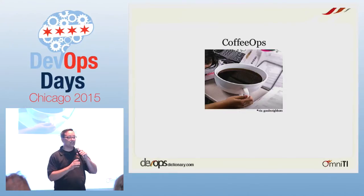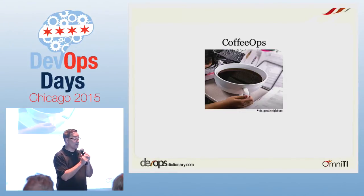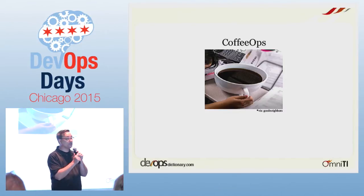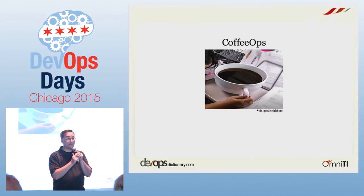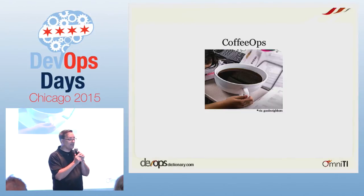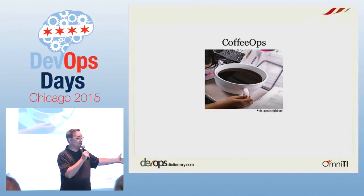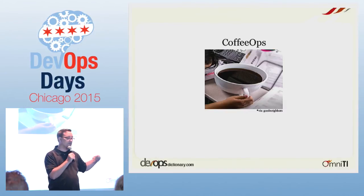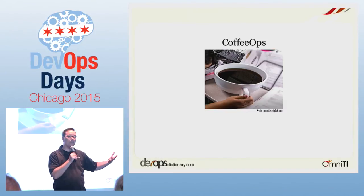Coffee Ops. This doesn't actually mean drinking a bunch of coffee and doing your work — that's normal anyway, we don't need a word for that. Instead, Coffee Ops refers to a social movement. It's a meetup that was founded by Jennifer Davis, a name you'll probably hear a lot — she's a force of nature in the DevOps community. There is one in Santa Clara, one in Seattle, and a few others. If you don't have one locally, I highly encourage you to start one. They are wonderful — just people getting together and talking over coffee about DevOps.